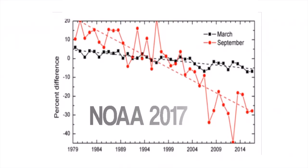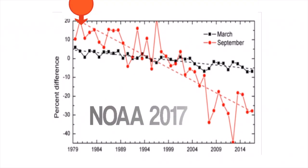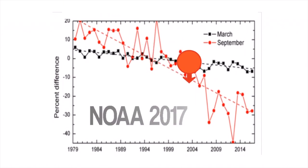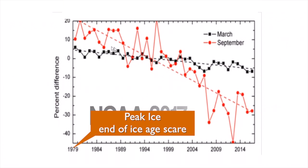This is a graph of the Arctic sea ice extent since 1979. What matters is the red one — this is the September, end-of-summer graph, and it shows a continual decline in the extent of the sea ice. This is the alarmist graph. So why did they choose 1979 as the starting date? Well, you can guess — that's because there was a very high level of sea ice then.